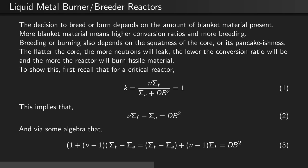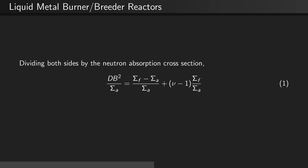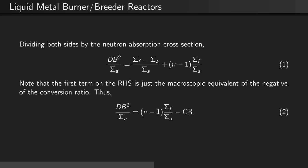Via some algebra, since we can add and subtract 1, we can say that 1 plus (nu minus 1) times σf minus σa equals σf minus σa plus (nu minus 1) σf, which equals D B-squared. Now, dividing both sides by the neutron absorption cross-section, D B-squared over Σa equals (Σf minus Σa) divided by Σa plus (nu minus 1) Σf divided by Σa. Note that the first term on the right-hand side is just the macroscopic equivalent of the negative of the conversion ratio.